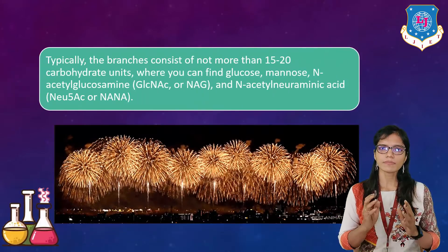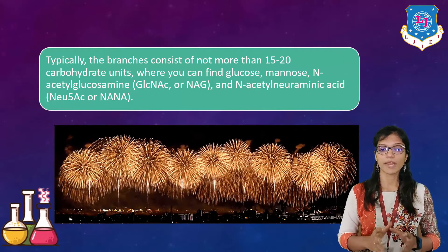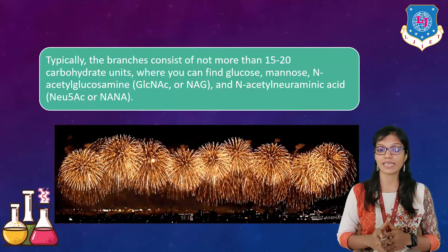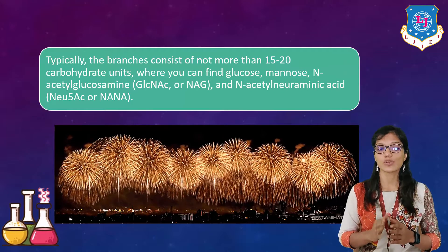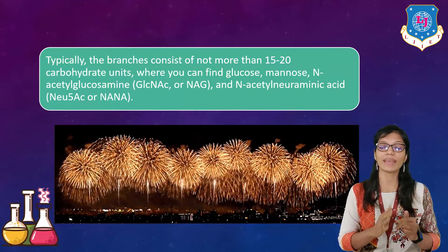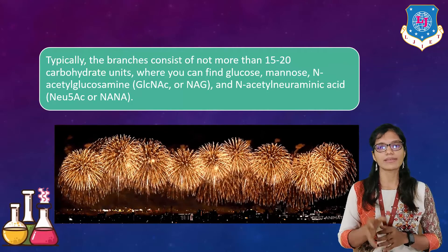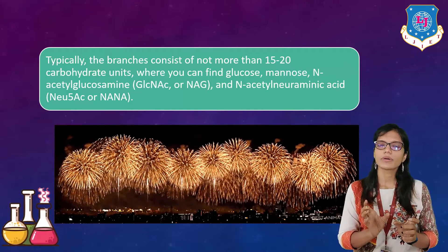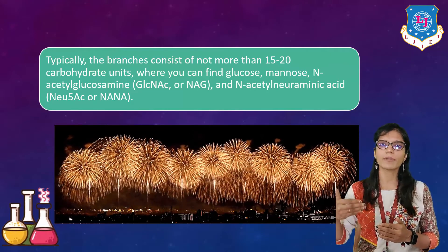Typically the polypeptide branches consist of not more than 15 to 20 carbohydrate units, where you can find glucose, mannose, N-acetylglucosamine (also known as GlcNAc or NAG), and N-acetylneuraminic acid (also known as Neu5Ac or NANA). These are the names of different types of carbohydrate units, and they combine to create the polypeptide — carbohydrates plus protein together.